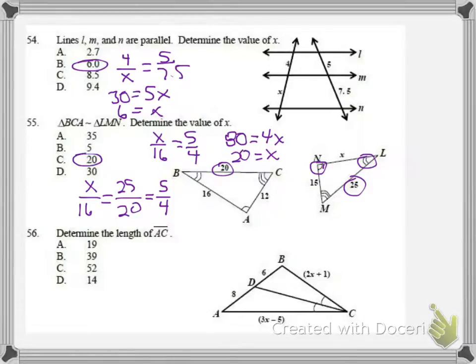Our last one here, number 56. We're going to set up our proportion again and say the ratio of these segments, 6 over 8, equals the ratio of these sides, 2X plus 1 over 3X minus 5. I'm going to reduce the 6 over 8 first. Make it 3 over 4 equals 2X plus 1 over 3X minus 5.